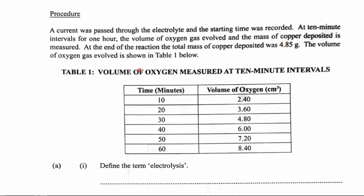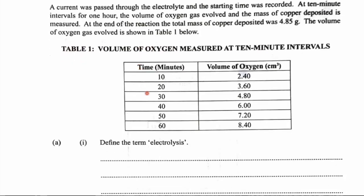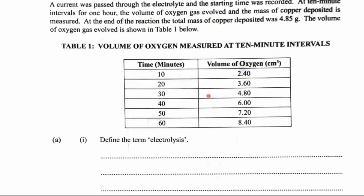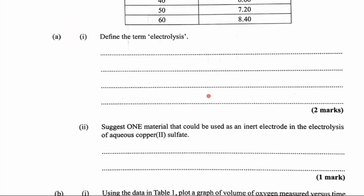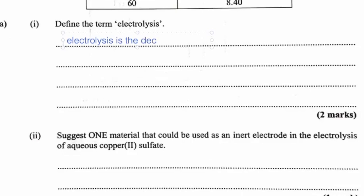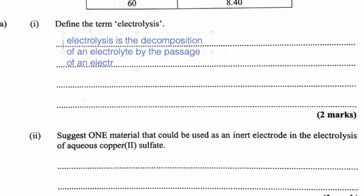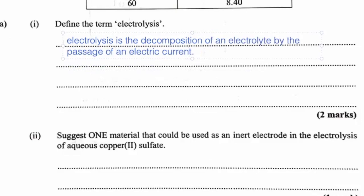The volume of gas evolved is shown in Table 1. At 10 minutes: 2.4, 20 minutes: 3.6, 30 minutes: 4.8, 40 minutes: 6 cm³, and so on. The first thing we're asked to do is define electrolysis. Electrolysis is the decomposition of an electrolyte by the passage of an electric current. Just like that, we would have gotten two marks.